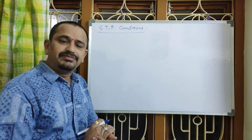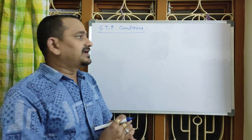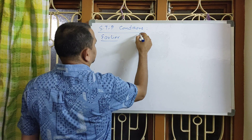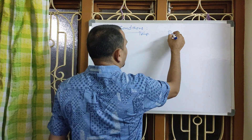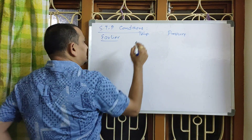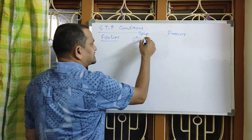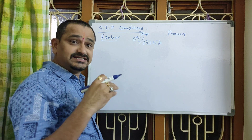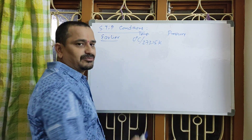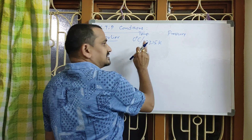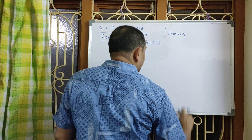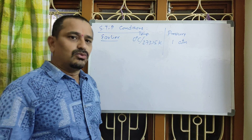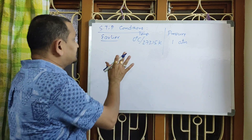Now our topic is standard temperature and pressure conditions. Earlier, standard temperature and pressure conditions were taken as: temperature — 0 degree Celsius or 273.15 Kelvin. You know the conversion of degree Celsius to Kelvin scale: degree Celsius plus 273.15. And pressure earlier was taken as one atmospheric pressure. This was the earlier scale.